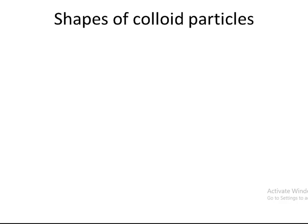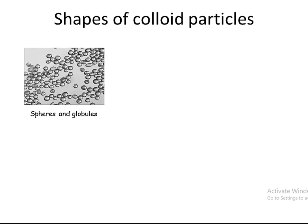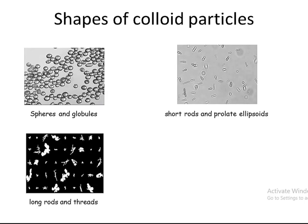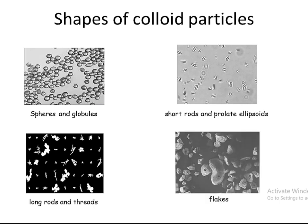Colloid particles can be available in a wide range of shapes. For example, they can be present as spheres and globules, as short rods and colloidal ellipsoids, as long rods and threads, or as flakes or branched structures.